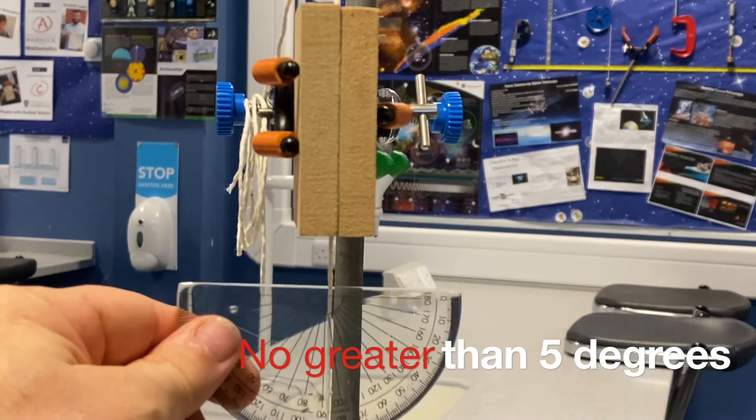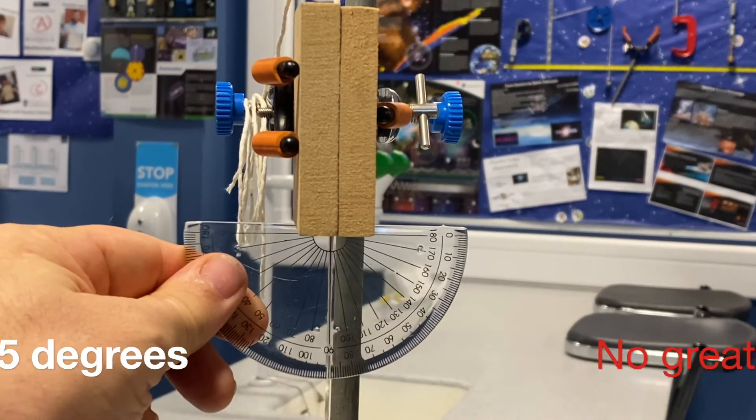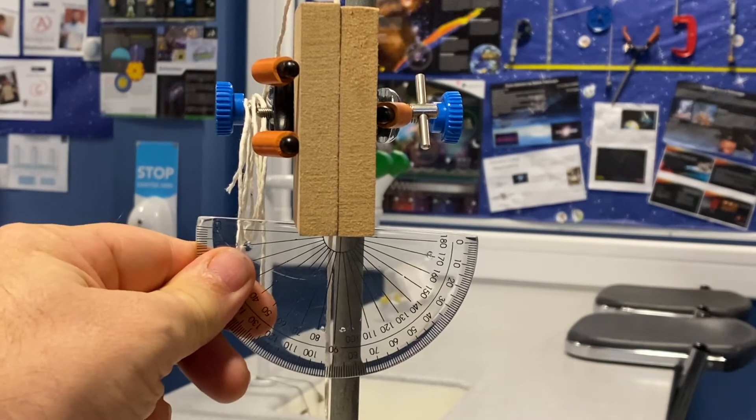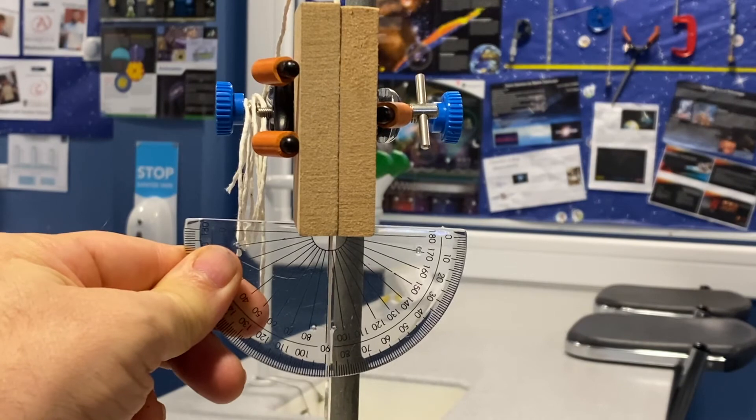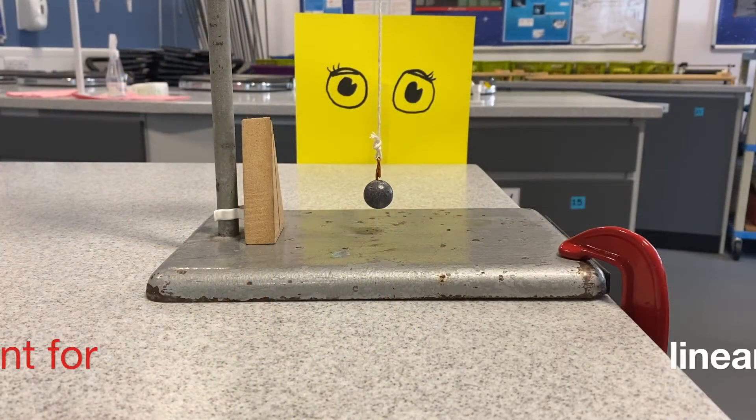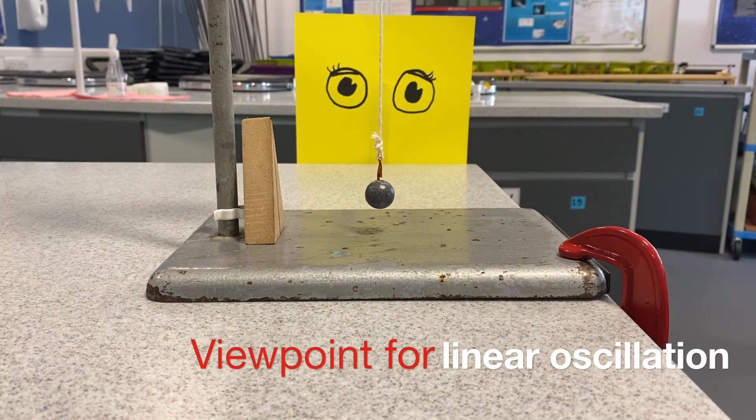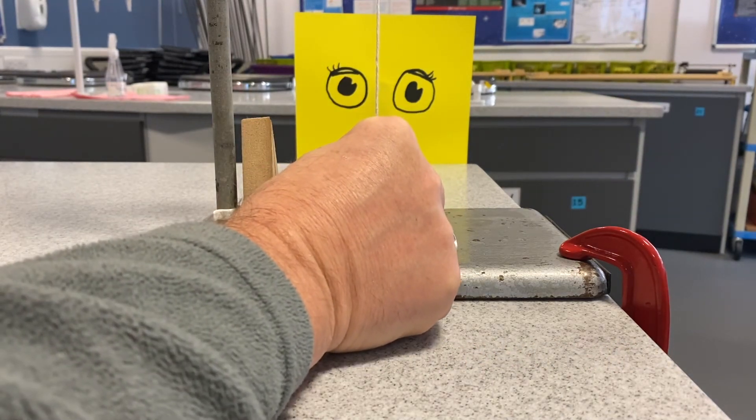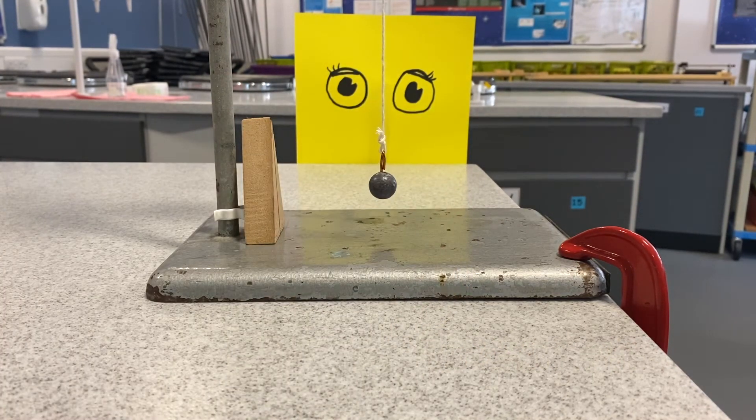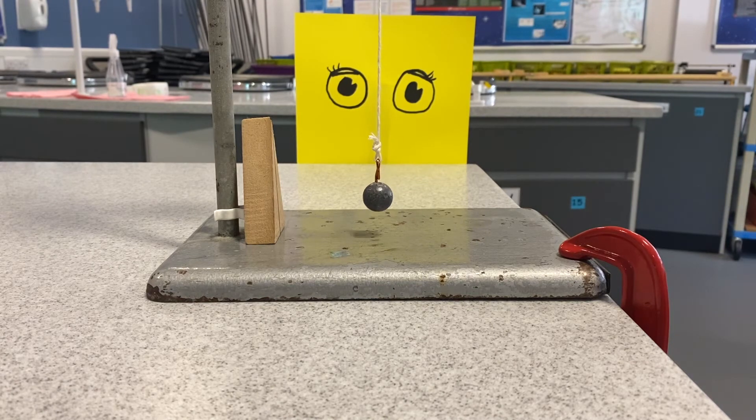When starting the pendulum oscillation at any given length, do not draw the pendulum back further than an angle of five degrees to produce linear oscillations with little or no circular motion. Use a low viewpoint in line with the path of the oscillation of the pendulum.